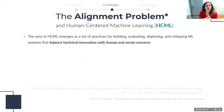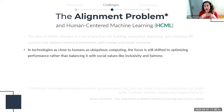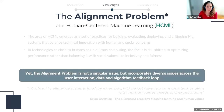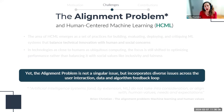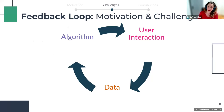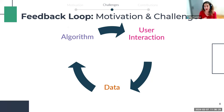In response to this problem, a research area called human-centered machine learning has emerged — a set of practices for building, evaluating, deploying, and critiquing machine learning systems that balance technical innovation with human and social concerns. The focus should not only be on optimizing performance and rapid development; rather, we should aim to balance these with social values such as inclusivity and fairness. In reality, the alignment problem incorporates diverse issues across the user interaction, data, and algorithm feedback loop.